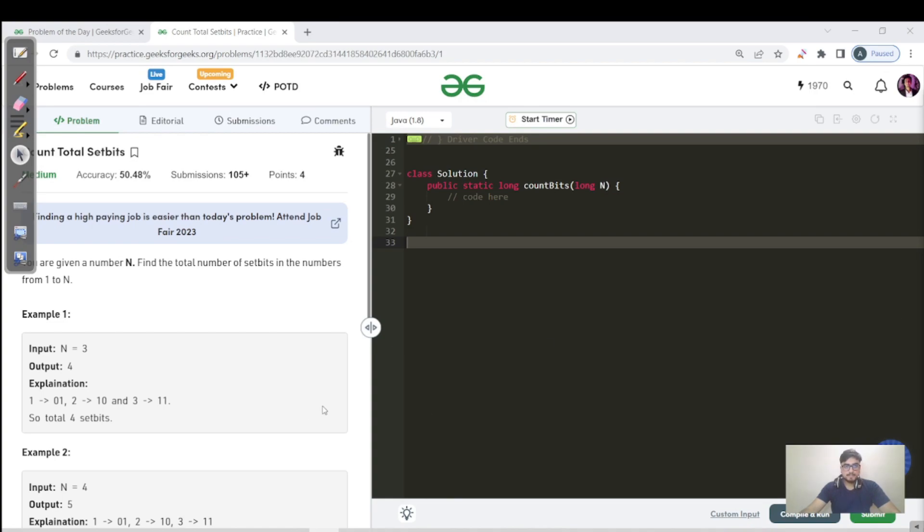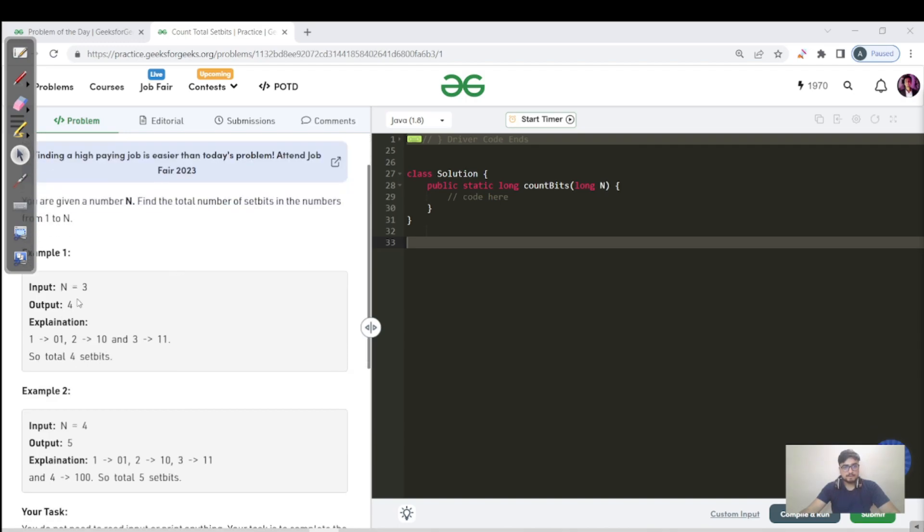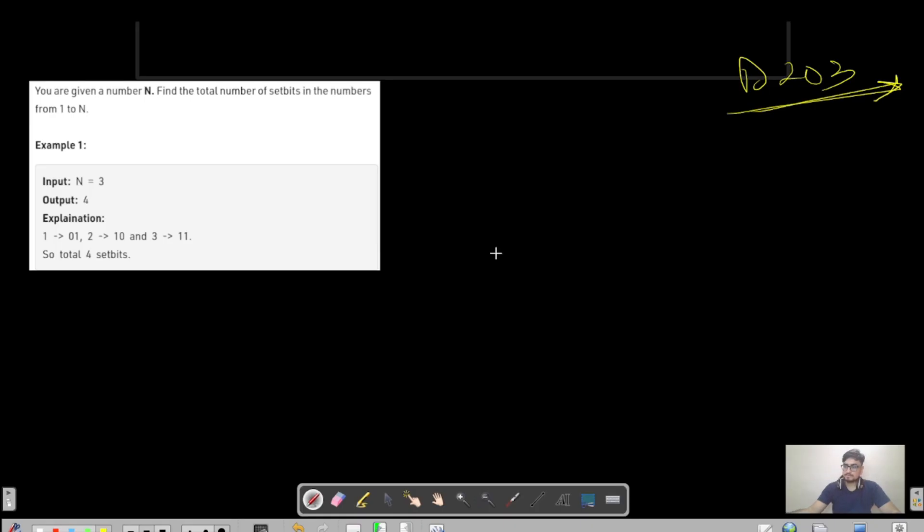Hello everyone, this is Akshay here. Let us see what today's question is about. Today's question is called Count Total Set Bits. You are given a number n and need to find the total number of set bits in numbers from 1 to n. For example, for input n equals 3, the numbers are 1, 2, and 3. In 1 the set bit count is 1, for 2 it's 1, and for 3 the set bit count is 2. So we have to return all the set bit counts, that is 1 plus 1 plus 2, which equals 4.